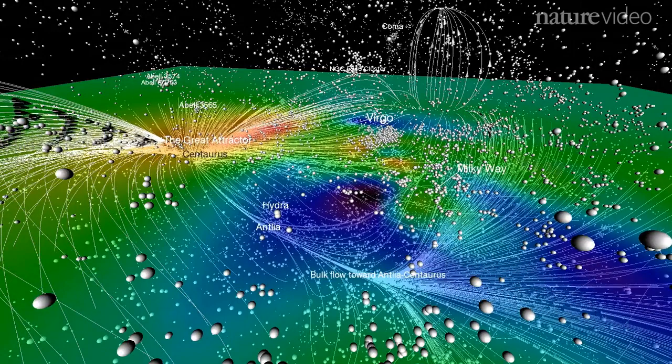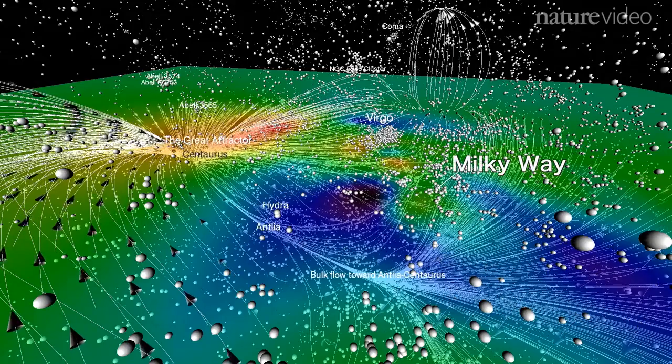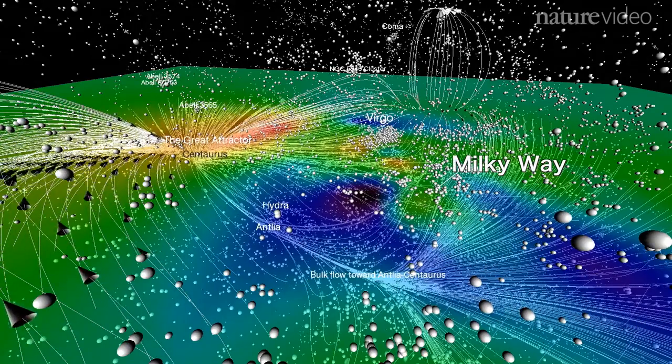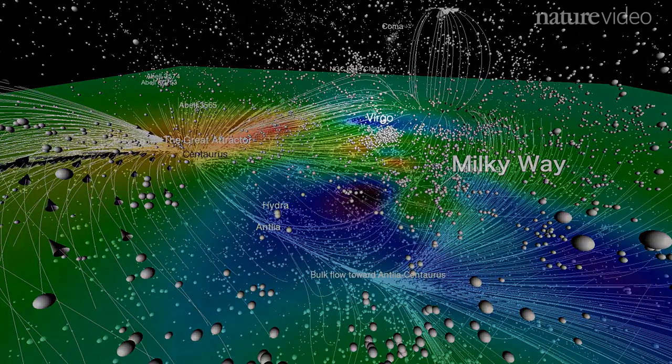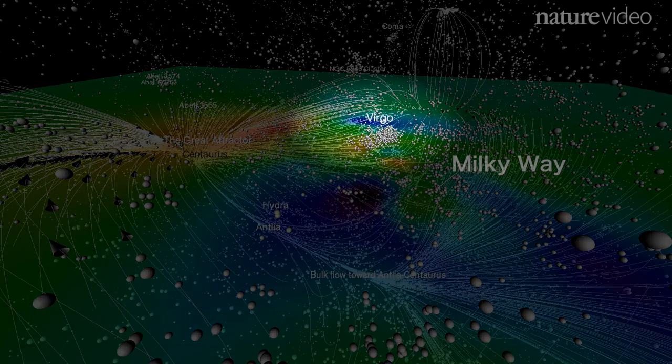Between the Great Attractor and us, the Milky Way, there's a relatively empty area, a blue void. And next to us is Virgo, a large and dense cluster whose bright galaxies have been observed from Earth for centuries.